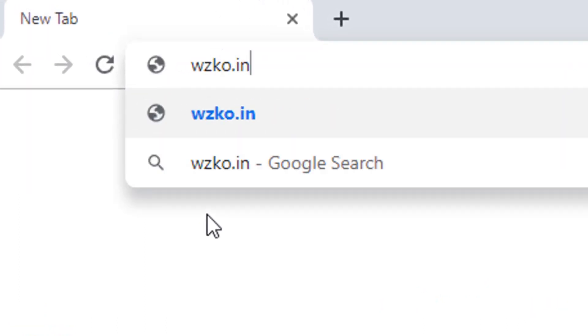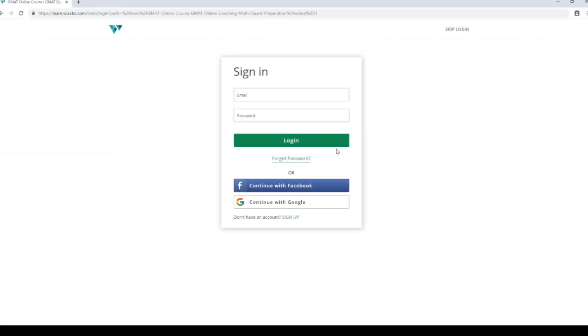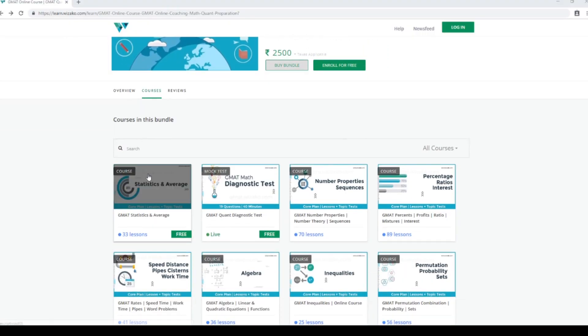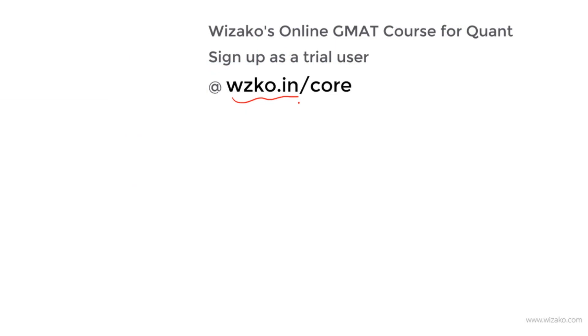Before you leave, two things. Sign up as a trial user at wzko.in slash core. One of the most comprehensive online GMAT courses. Get started with a free topic, statistics and averages. Build momentum to your GMAT preparation. Subsequently, pay up and unlock the remaining topics.